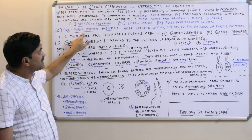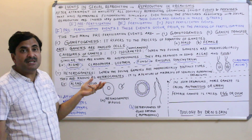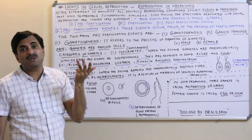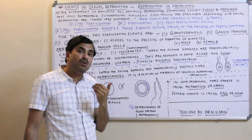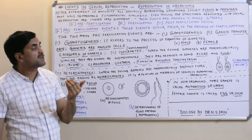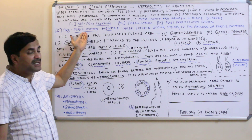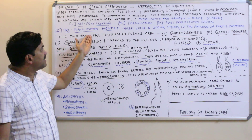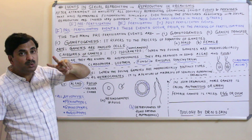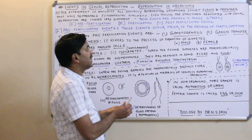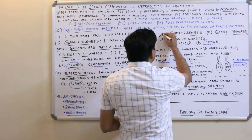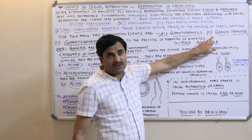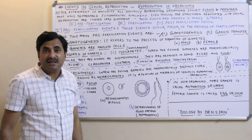Let's start with the pre-fertilization events. As the name indicates, pre-fertilization means all those events which occur prior to the process of fertilization — all those events which occur before fertilization are studied under pre-fertilization events. The two main pre-fertilization events are: one is gametogenesis, and another is known as gamete transfer.